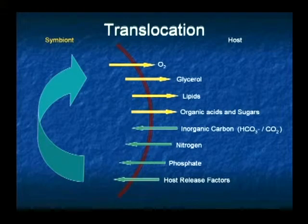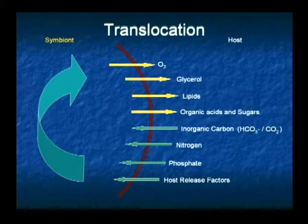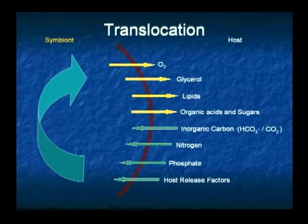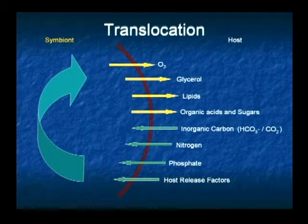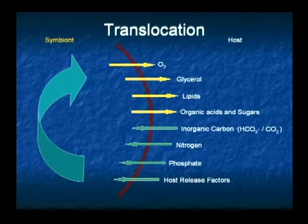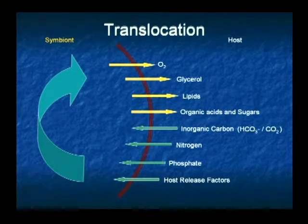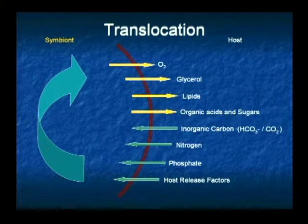From the host, you'll get nitrogen and host release factors, which will propagate that as well, phosphates, and inorganic carbon. The dominant species in seawater of carbon available for uptake is bicarbonate. And then that's converted through enzymic reactions into CO2, which is then used in photosynthesis to produce the other metabolites that are translocated back to the host, in terms of organic acids, O2, glycerol in the form of triglycerides, and lipids.